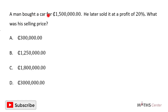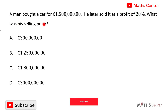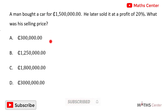A man bought a car for 1.5 million CDs. He later sold it at a profit of 20%. What is the selling price? This is a multiple choice question, so we solve the question and after that we will pick the correct option.